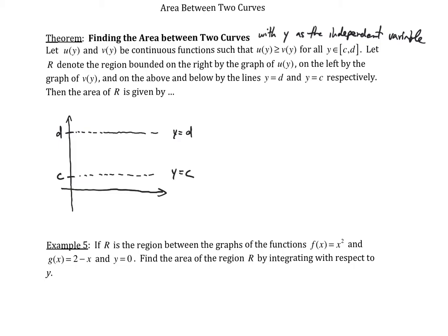I have one curve that looks like this — this is the curve u of y. So u of y actually equals an x value. This time, our independent variable is going to be y, and our dependent variable is going to be x. For the second curve, drawn in green, this is the curve x equals v of y. Let me shade the area that we're trying to calculate.